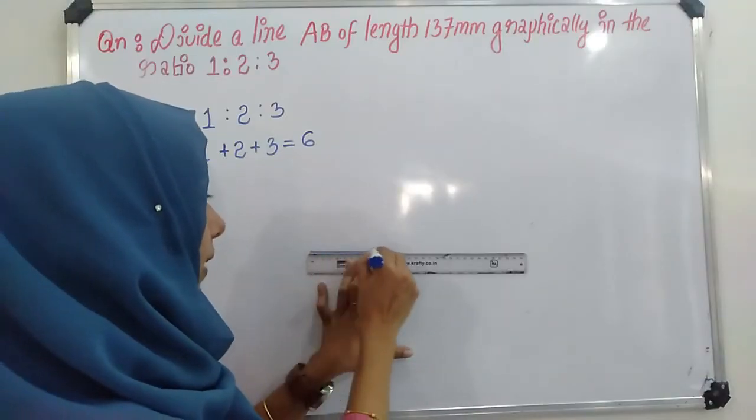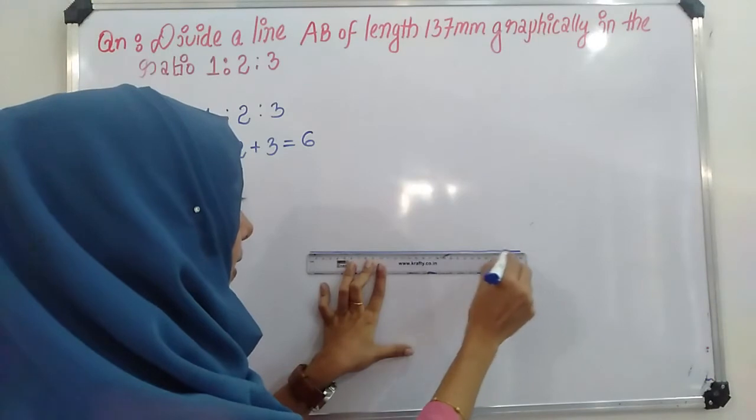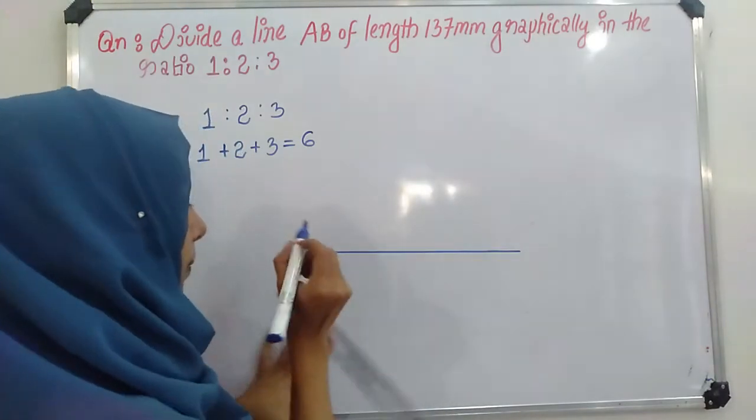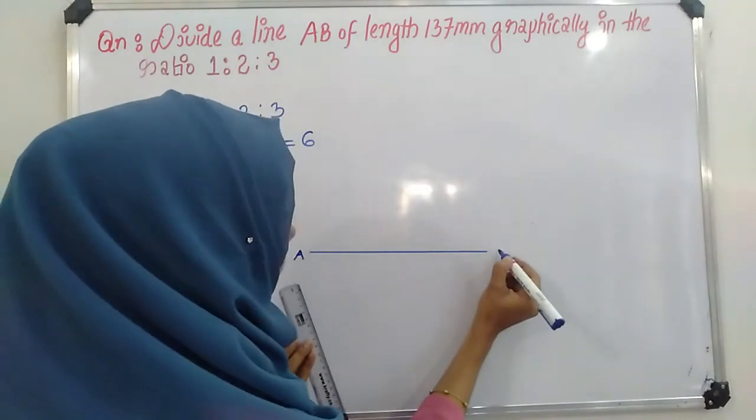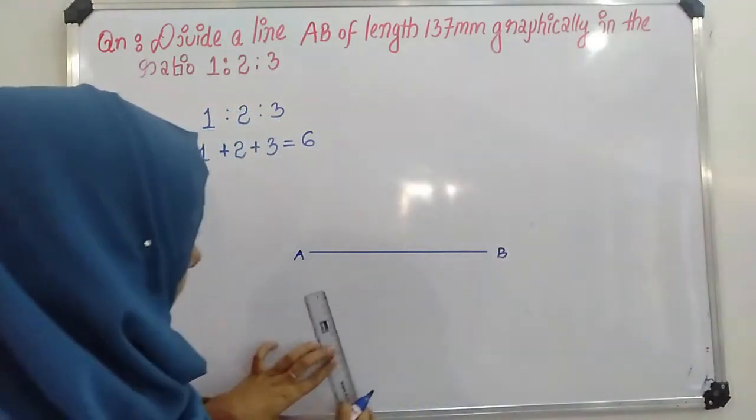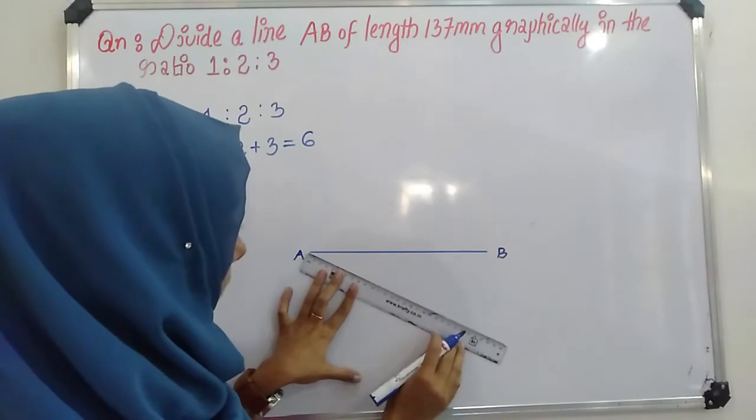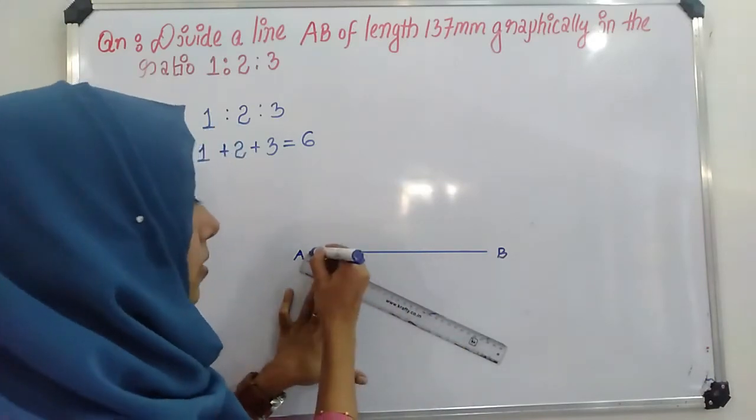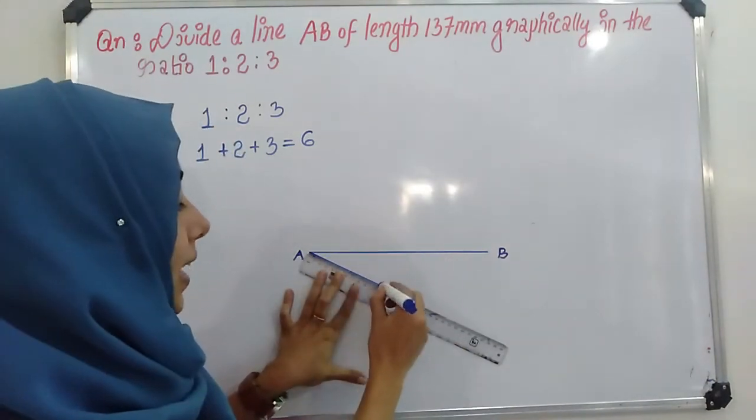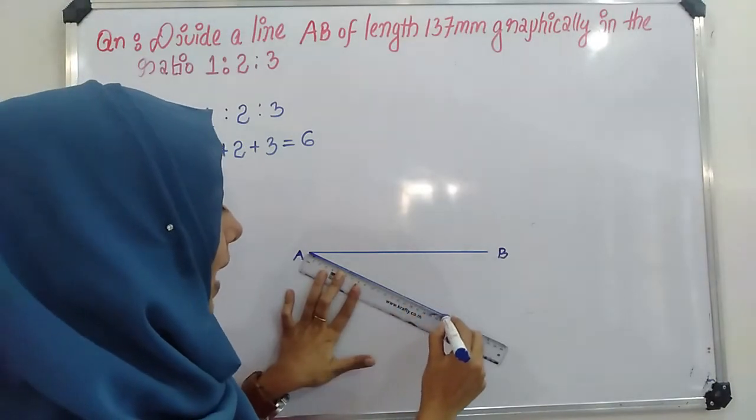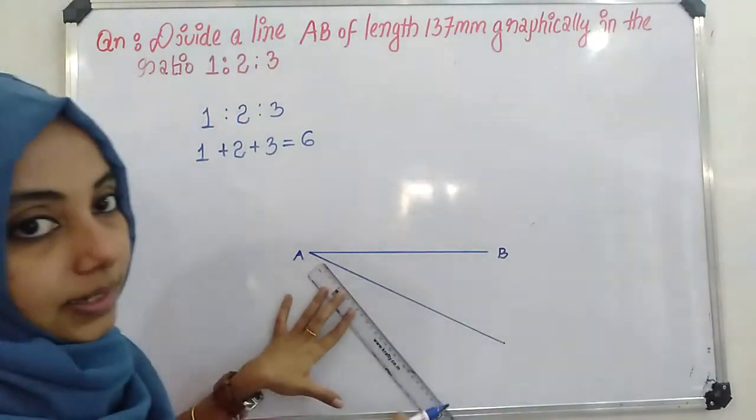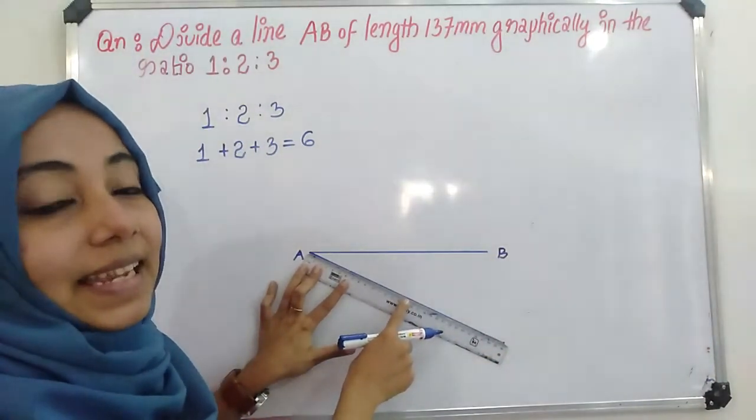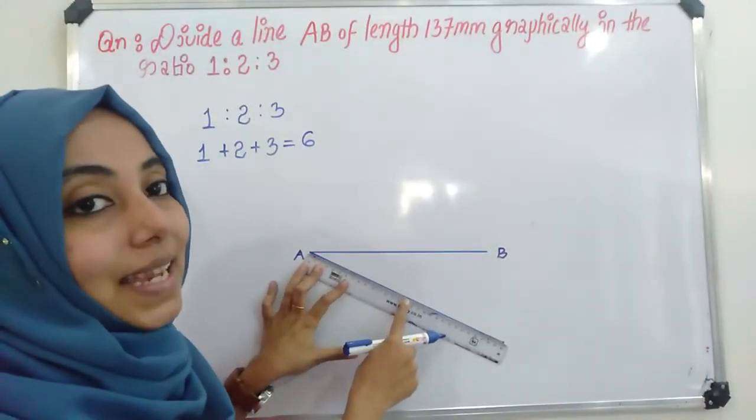Draw given length AB. Draw an inclined line which is having angle of inclination less than 90 degrees. Divide this inclined line into 6 equal parts.